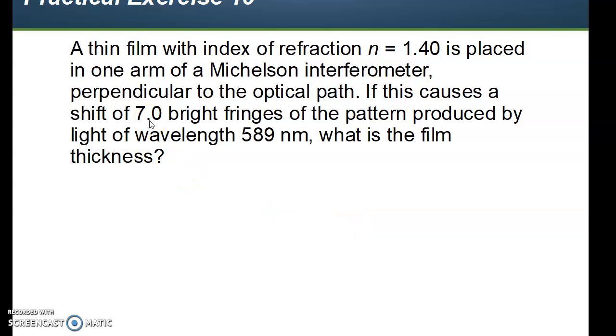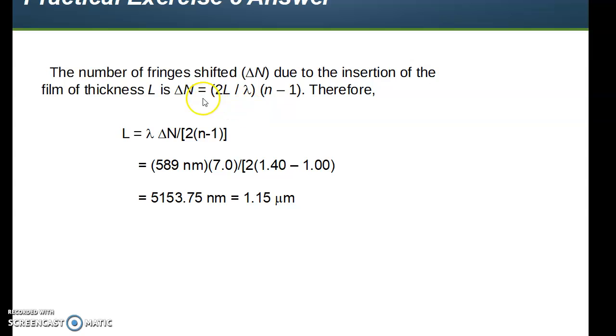To apply that, this is problem number 10, practical exercise number 10, and this is problem number 80. A thin film, you're given a refractive index, 1.40, placed in one arm of a Michelson interferometer, perpendicular to the optical path. If this causes a shift of 7.0 bright fringes of the pattern produced by light wavelength 589 nanometers, what's the film thickness? Essentially, it's just the number of fringes shifted due to the insertion, so that L, the thickness of the film, is the lambda, which is 589 nanometers, times the number, you've got 7 of them, divided by 2 times n minus 1, and the refractive index is 1.40 minus 1, so that's 0.40.